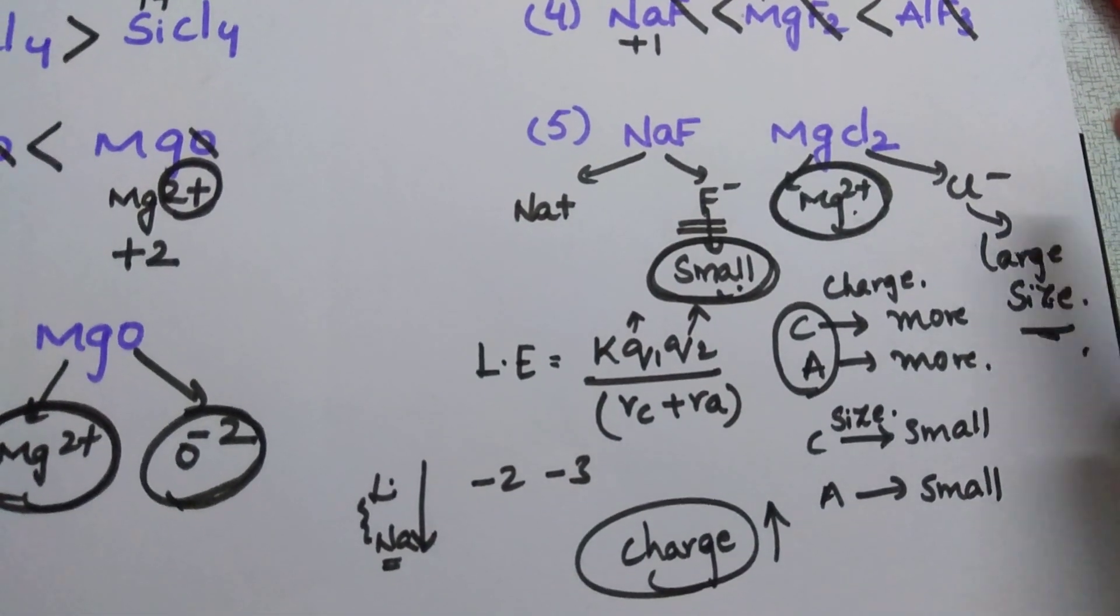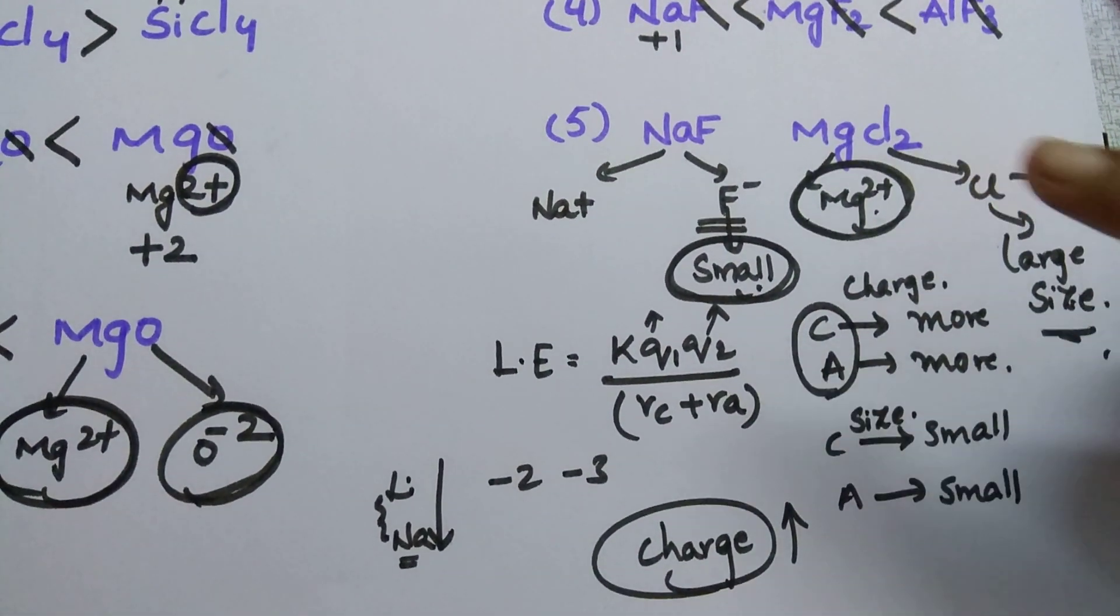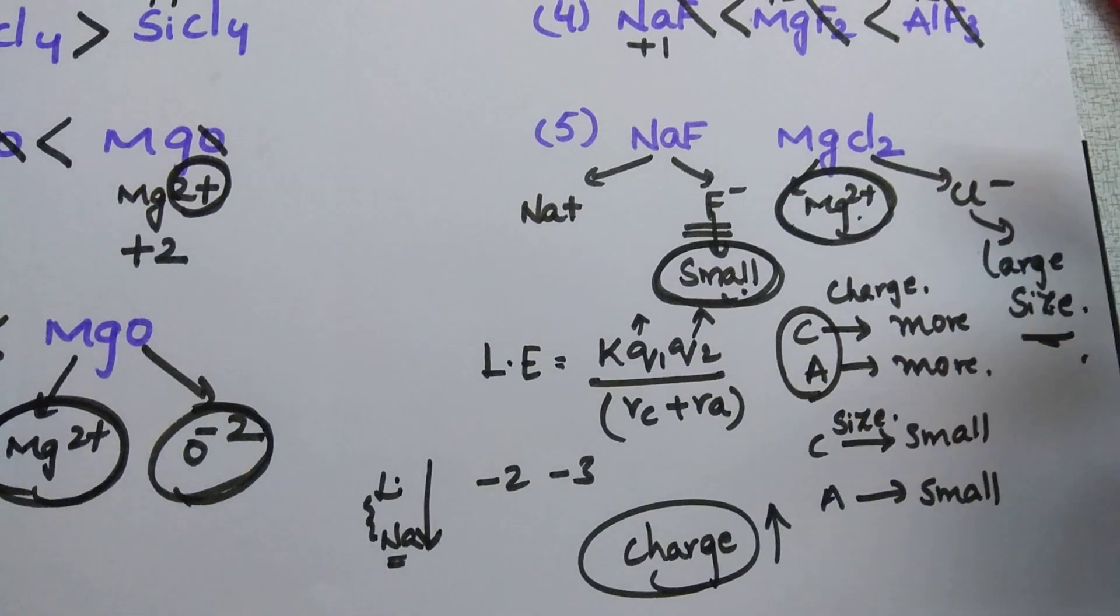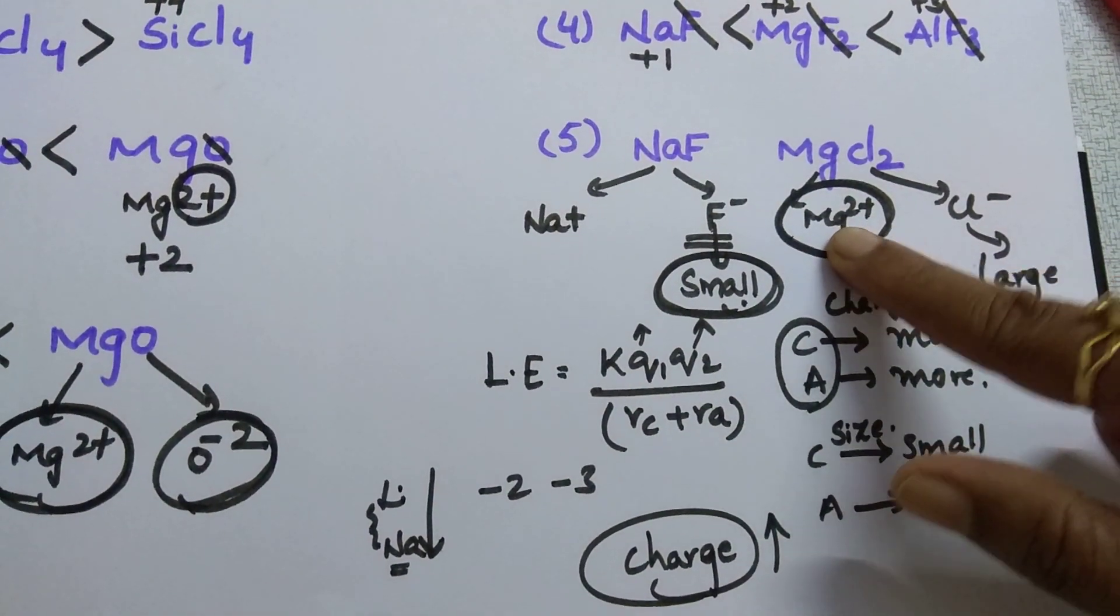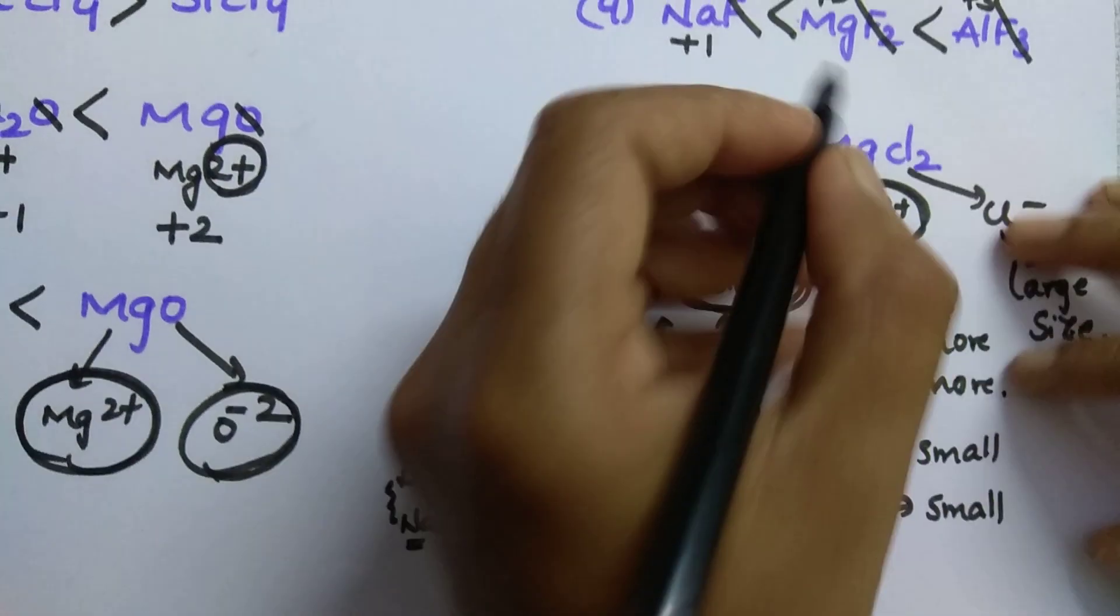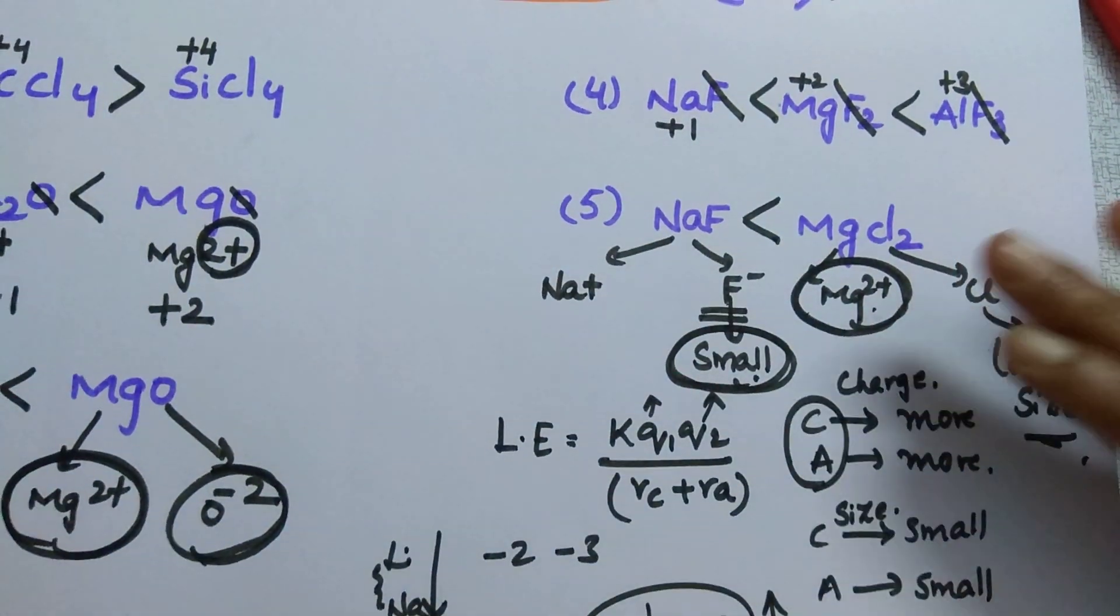Yes, you are right. Charge is always a dominating factor than the size. So which is having more lattice energy, students, MgCl2 is having more lattice energy than the NaF.